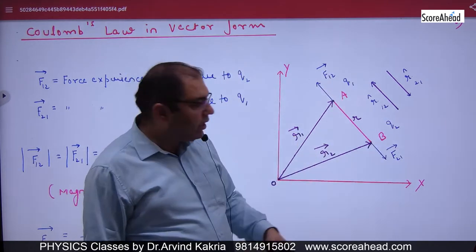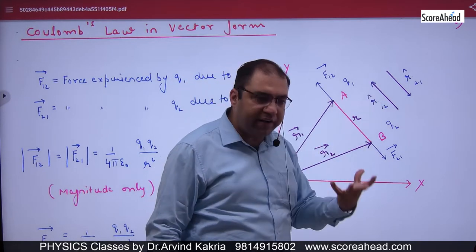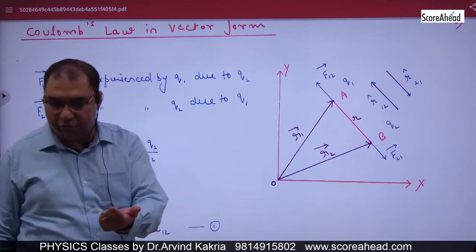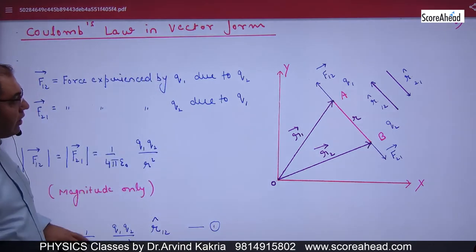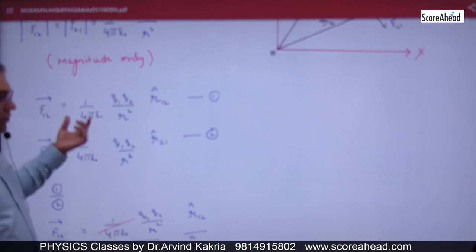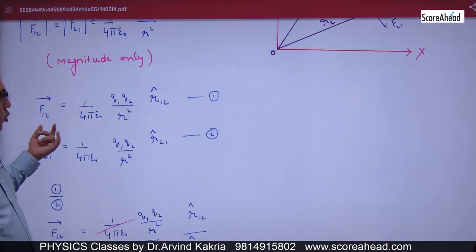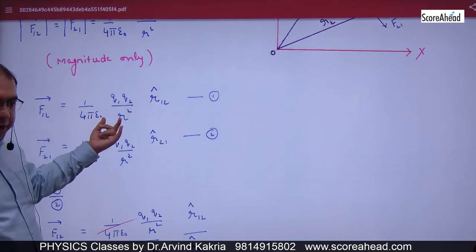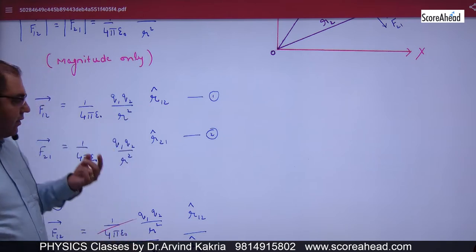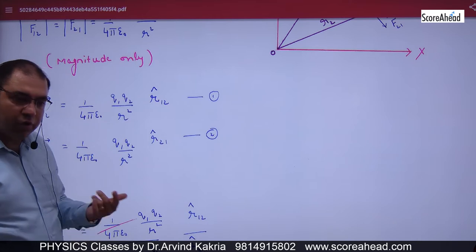F12 vector has magnitude and direction given by R12 cap. F21 vector has the same magnitude but its direction is given by R21 cap. So F12 vector equals the magnitude multiplied by R12 cap, and F21 vector equals the magnitude multiplied by R21 cap.